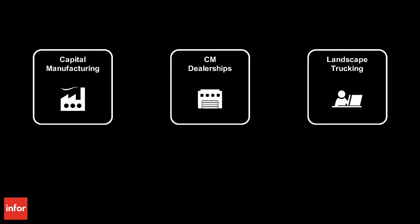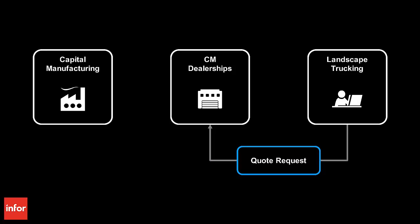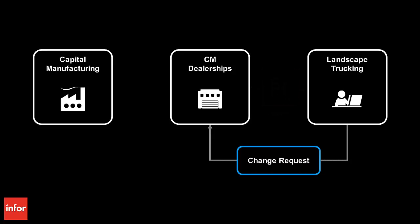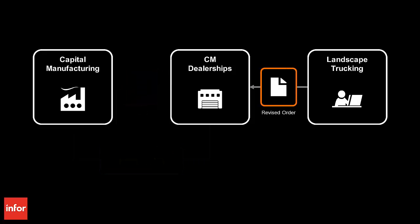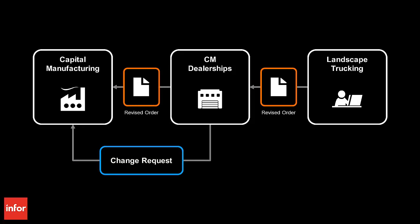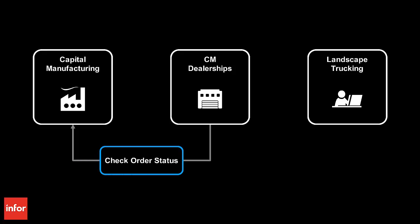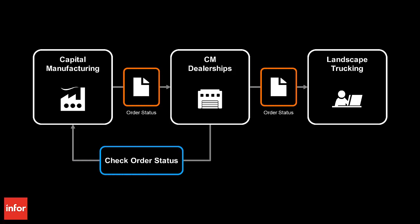In this scenario we will see how CM Dealerships is using Infor Product Configuration Management to manage their sales process. First, CM Dealerships will respond to a request for quote from Landscape Trucking, generating a 100% complete and accurate quote and proposal. Next, CM Dealerships will respond to a change request from Landscape Trucking, generating a competitive pricing proposal to win their business, and then convert the revised quote into an order for Capital Manufacturing. After the order is placed, we will see how Capital Manufacturing responds to a change request and a special request from CM Dealerships, generating an updated price, bill of materials, routing instructions, and manufacturing drawings. Finally, we will see how Capital Manufacturing provides updated order status information to CM Dealerships.